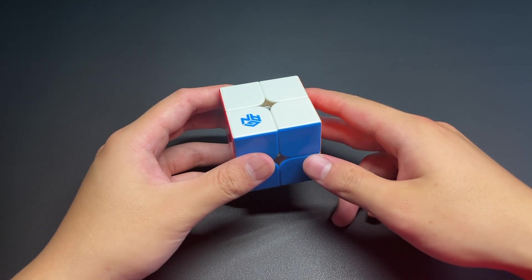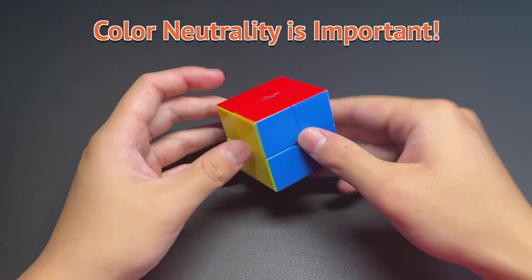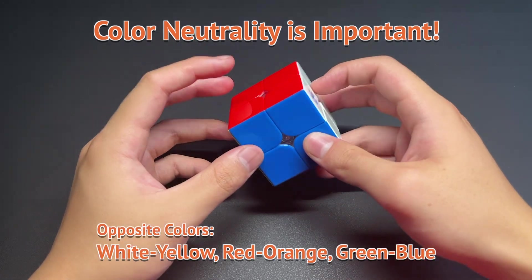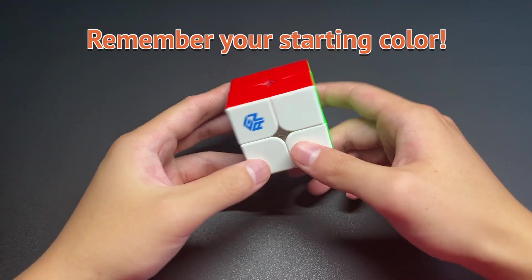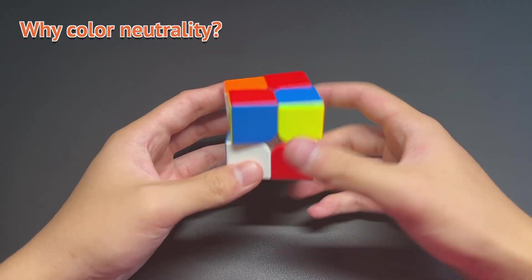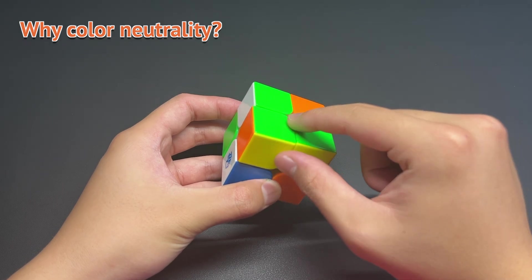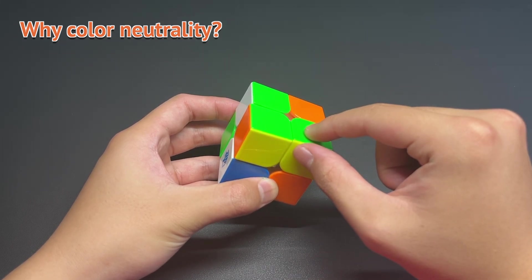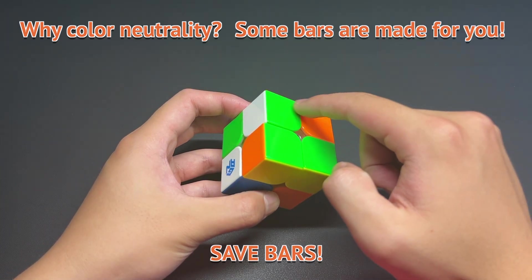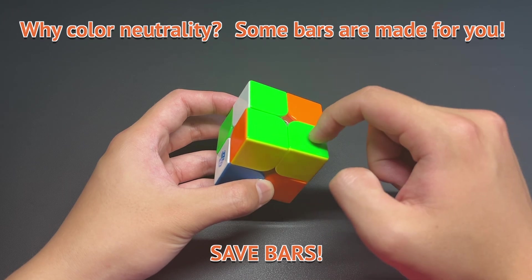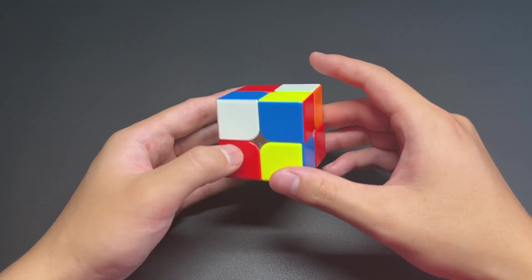So, first of all, when you're completing your first layer, try to be color-neutral. Learn the opposite colors, for example, white and yellow, red and orange, and green and blue, and keep in mind which color you started throughout the whole solve. If you're starting the solve, and you see this bar here, you see this green and yellow bar.